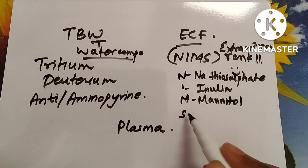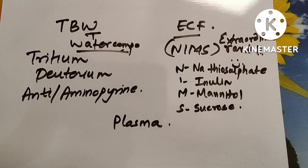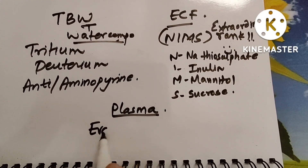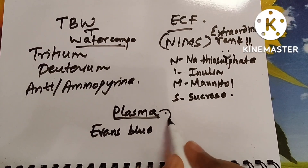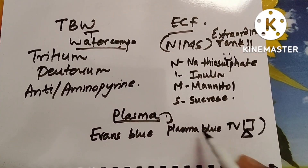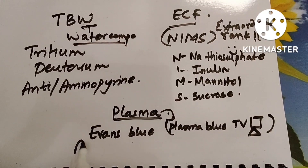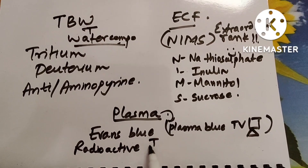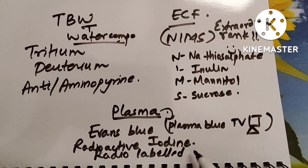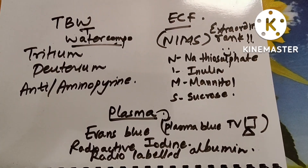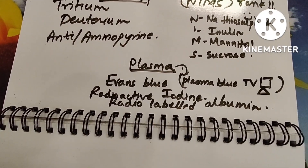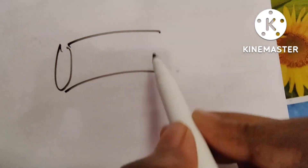For plasma, the key substance is Evans blue — remember it as 'plasma blue TV.' Additionally, radioactive iodine and radio-labeled albumin are used for measuring plasma composition. Albumin is a protein present in plasma. This covers total body water, ECF, plasma, and both I's — interstitial and intracellular fluid.